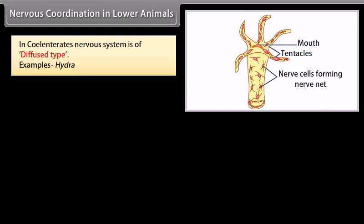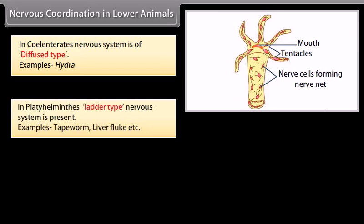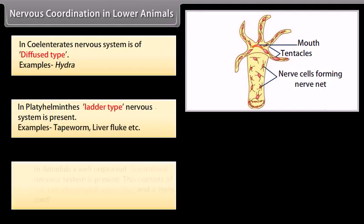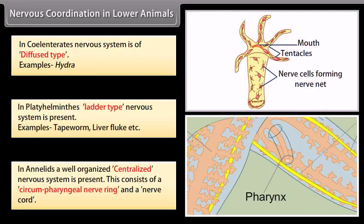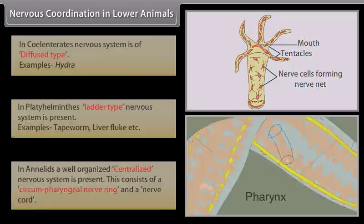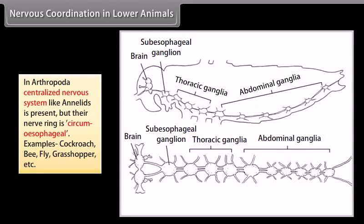In coelenterates, the nervous system is of the diffused type — example: Hydra. In platyhelminthes, a ladder-type nervous system is present — examples: tapeworm, liver fluke. In annelids, a well-organized centralized nervous system is present, consisting of a circumpharyngeal nerve ring and a nerve cord. In arthropoda, a centralized nervous system similar to annelids is present, but their nerve ring is circumesophageal.